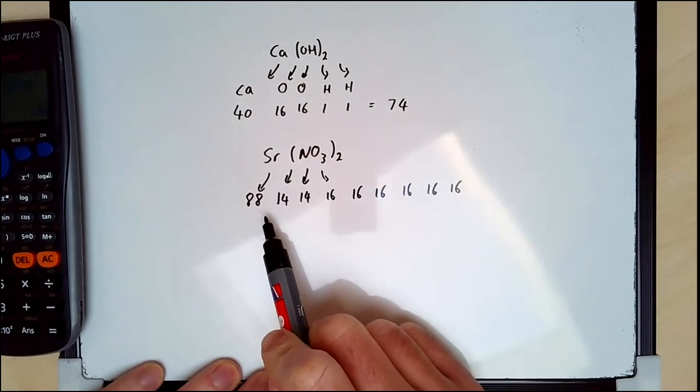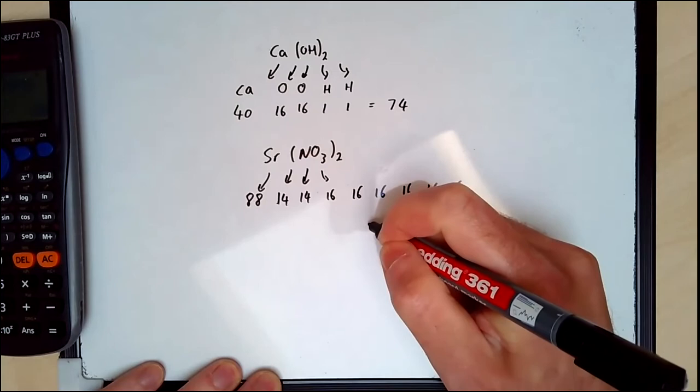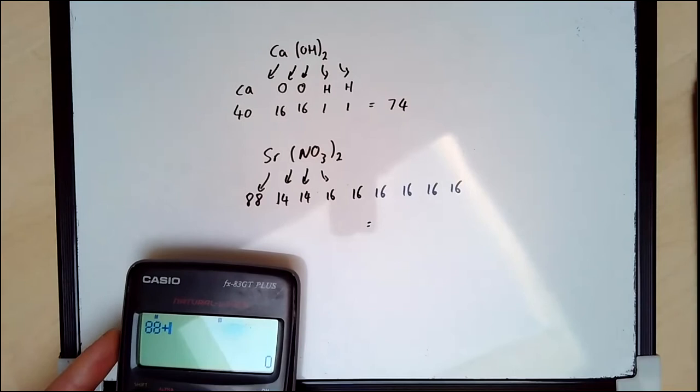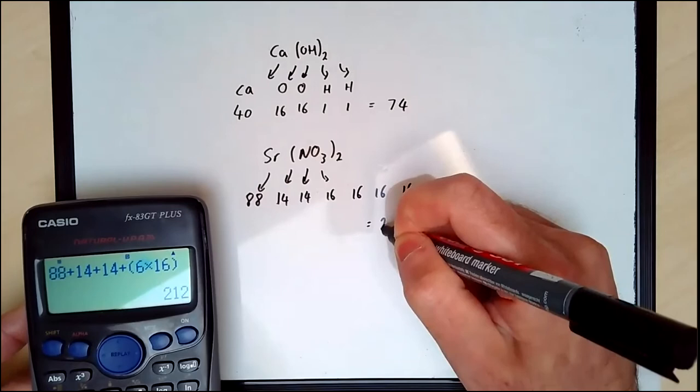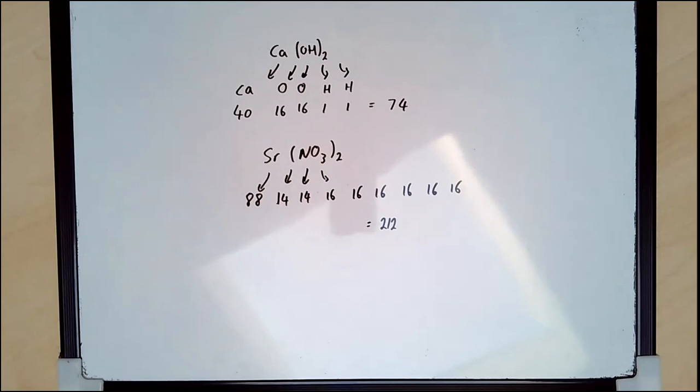I'm going to get my calculator. 88, 14, 14. And actually I'm just going to do that in brackets, so I'll do 6 times 16. And that will give me 212. If you've got that correct, well done. You're ready to carry on with the video. If you didn't, then I suggest you go back and watch the explanation again and have another go.